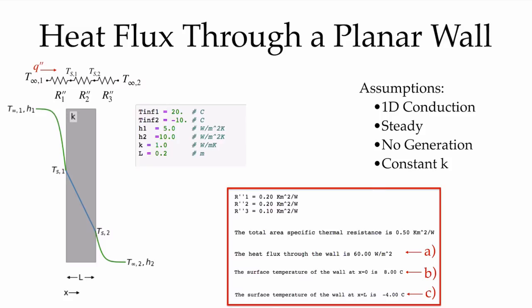Looking at these two convection layers: H2 is larger than H1, and that's why resistance R3 is smaller than resistance R1. Because that resistance is smaller, the temperature drop is smaller in this layer versus the other layer which has a larger resistance.